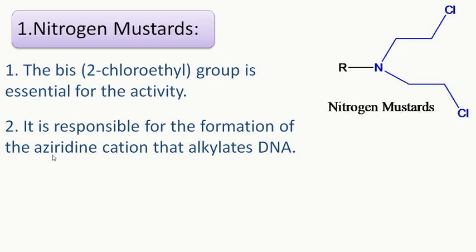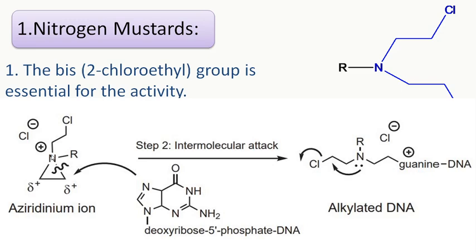The bis-2-chloroethyl group, or 2-chloroethyl group, is responsible for the formation of the aziridinium cation that alkylates the DNA. After the formation of the aziridinium cation, it is generally supposed to form only after entering the cancer cell.